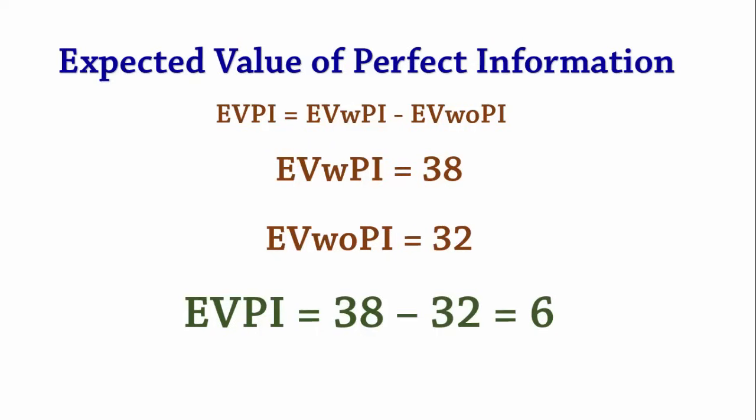So if we have perfect information about the states of nature before the decision is made, the expected value of that perfect information will be 6. And that's how you calculate EVPI. Thanks for watching.